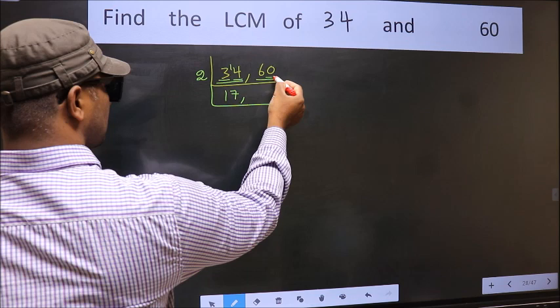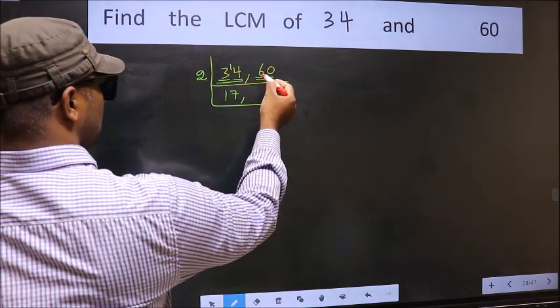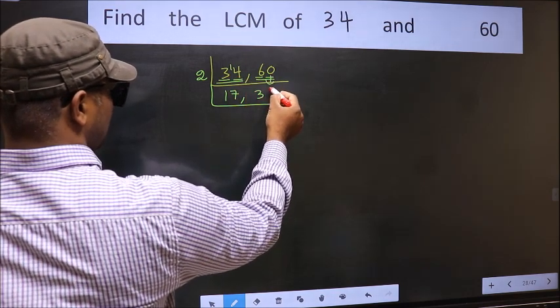The other number 60, last digit 0, so this is divisible by 2. First number 6, when do we get 6 in the 2 table? 2 times 3 is 6. This 0 as it is down.